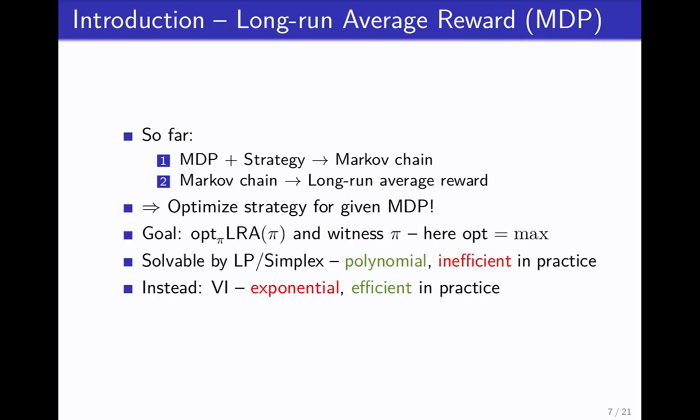What we've seen is we have an MDP and a strategy, we get a Markov chain. If we have a Markov chain, we get this long run average reward. In a more abstract sense, we take an MDP, we throw something at it, we get out a number. We can optimize this. We try to find an optimal strategy which optimizes the long run average reward. For the sake of simplicity, we'll only consider the reward maximization, but you can also do it with minimizations completely the same.